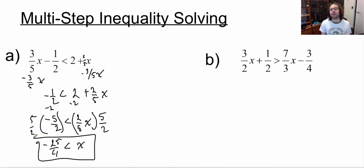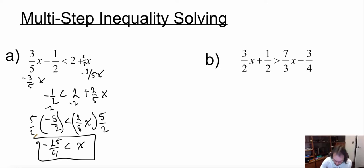Let's take a look at my next one here. In this one, I have 3 over 2x plus 1 over 2 is greater than 7 over 3x minus 3 over 4. First thing I look at, I know 7 over 3 is greater than 3 over 2. So I'm going to move this 3 over 2 to this side. So I'm going to subtract 3 over 2x.